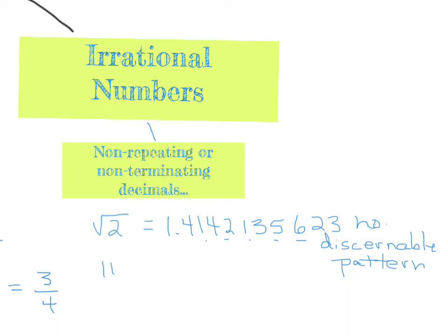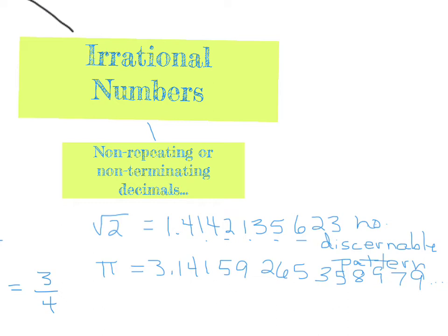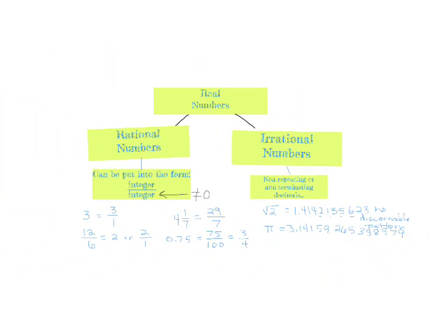How about the number pi? If you put pi into your calculator, you get 3.14 — and a lot of times people just stop and abbreviate it as 3.14, but it's really 3.14159265358979... and it goes on and on. Again, there's no discernible pattern and it does not terminate, so pi is also in the set of irrational numbers. There are many similar numbers to these in the irrationals.